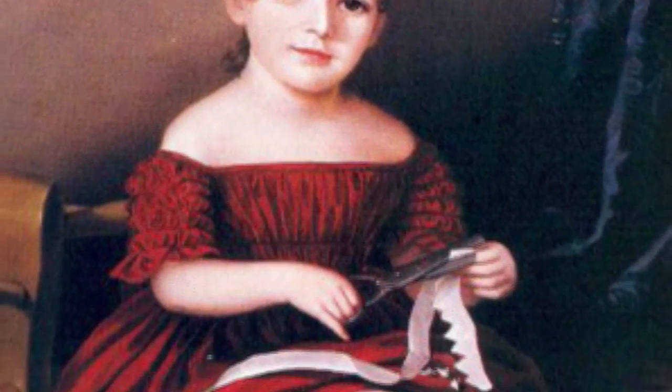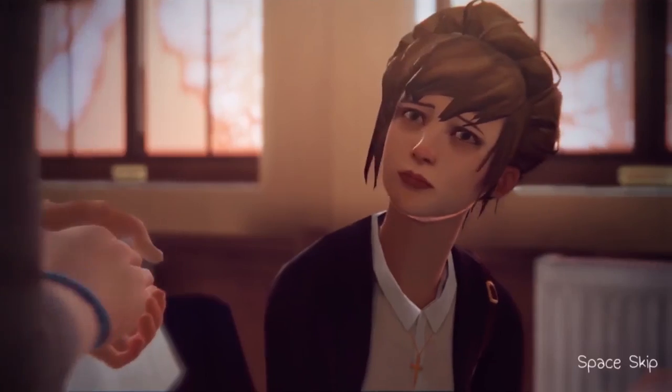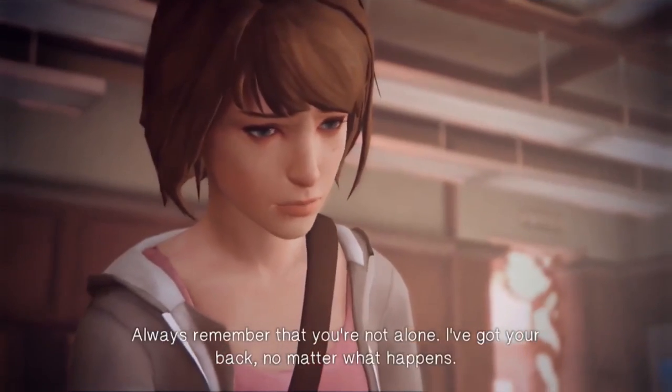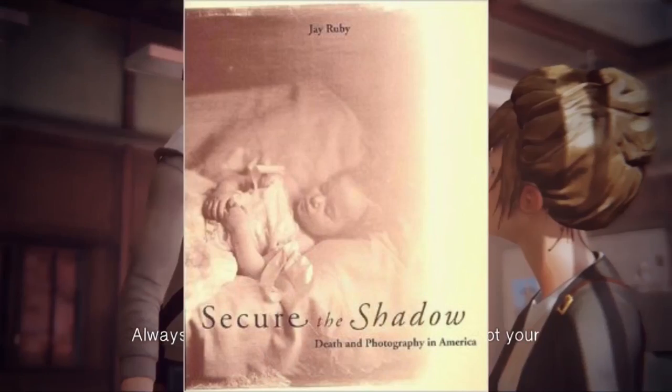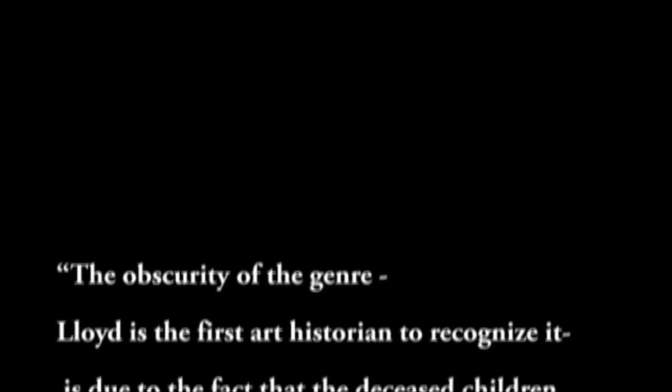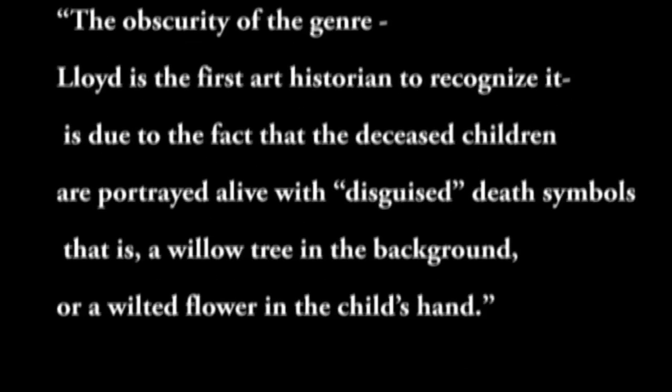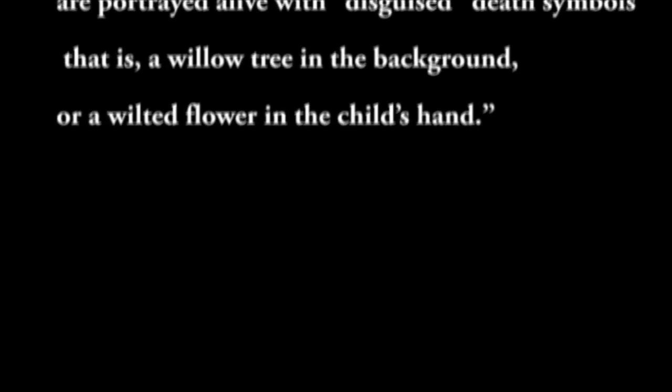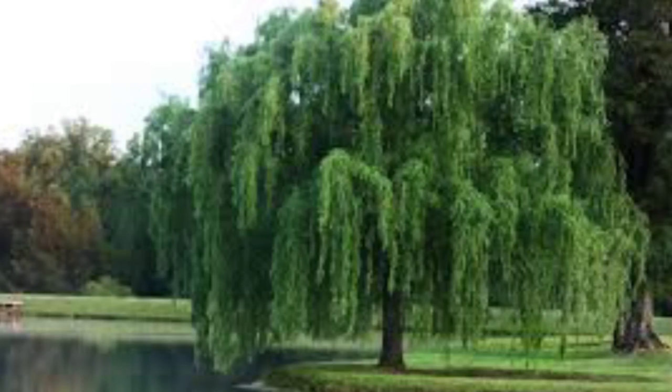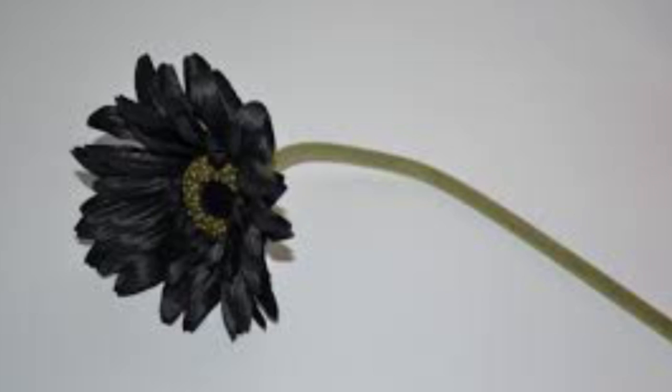At times they were even shown as a middle ground between life and death, which was typically the case with a subgenre of these paintings of dead children. This was first recognized as a trend by Phoebe Lloyd, an art historian who spoke about it in her article 'Posthumous Mourning Portraiture,' later cited by Jay Ruby's 'Securing the Shadows: Death in Photography in America.' He states the obscurity of the genre is due to the fact that the deceased children are portrayed alive with disguised death symbols — a willow tree in the background or a wilted flower in the child's hand. An example of this is a portrait of Camille, done after the death of a young girl, portraying her in a clouded background holding a watch stopped at a specific, presumably important time, with the clouds representing her being in this world and the next.